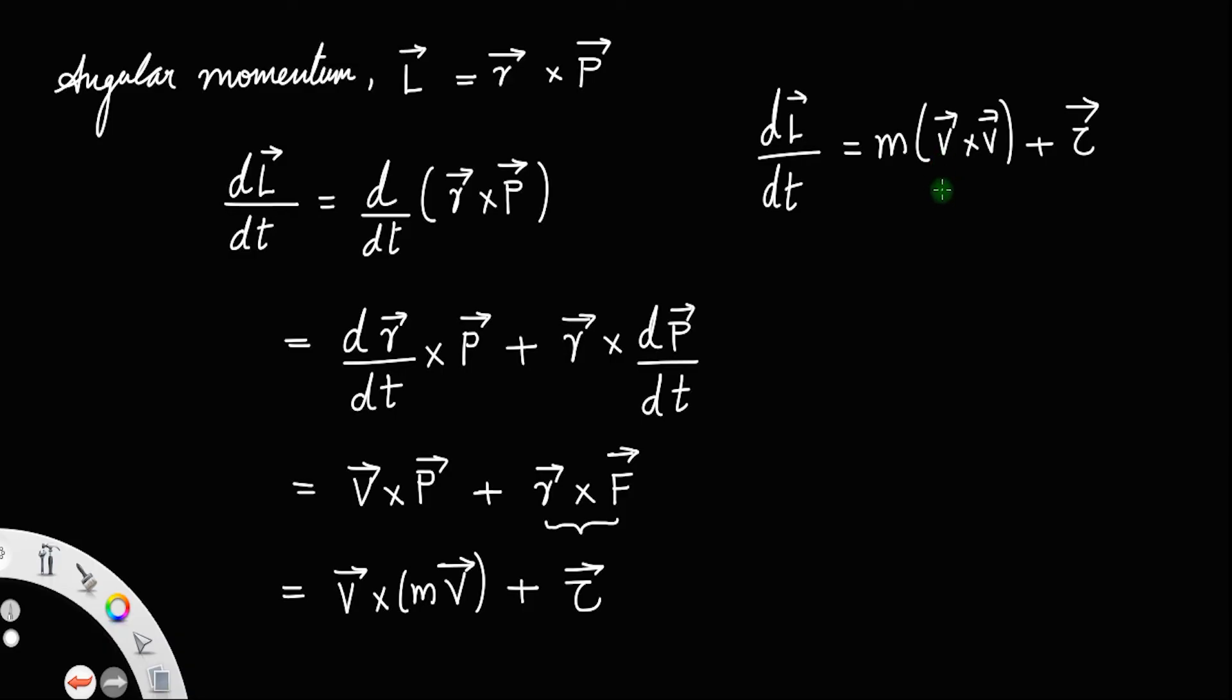Now the cross product of any vector with that vector is zero. So this will be zero. Therefore dL by dt is equal to zero plus torque. That is, rate of change of angular momentum dL by dt gives the torque. So this is the relationship between angular momentum and torque.